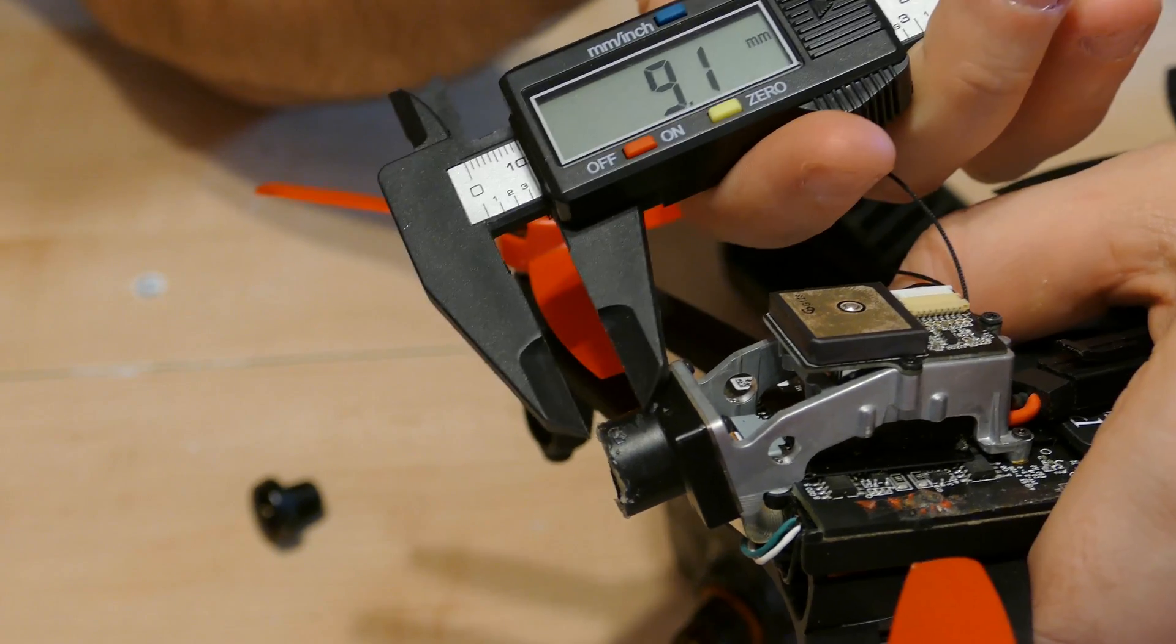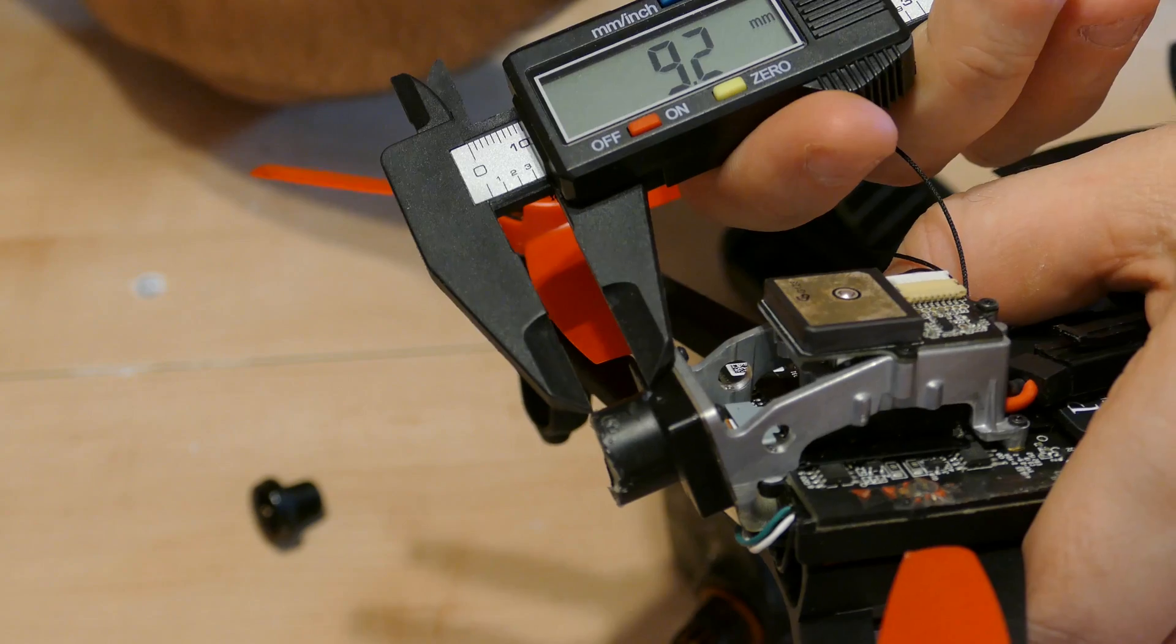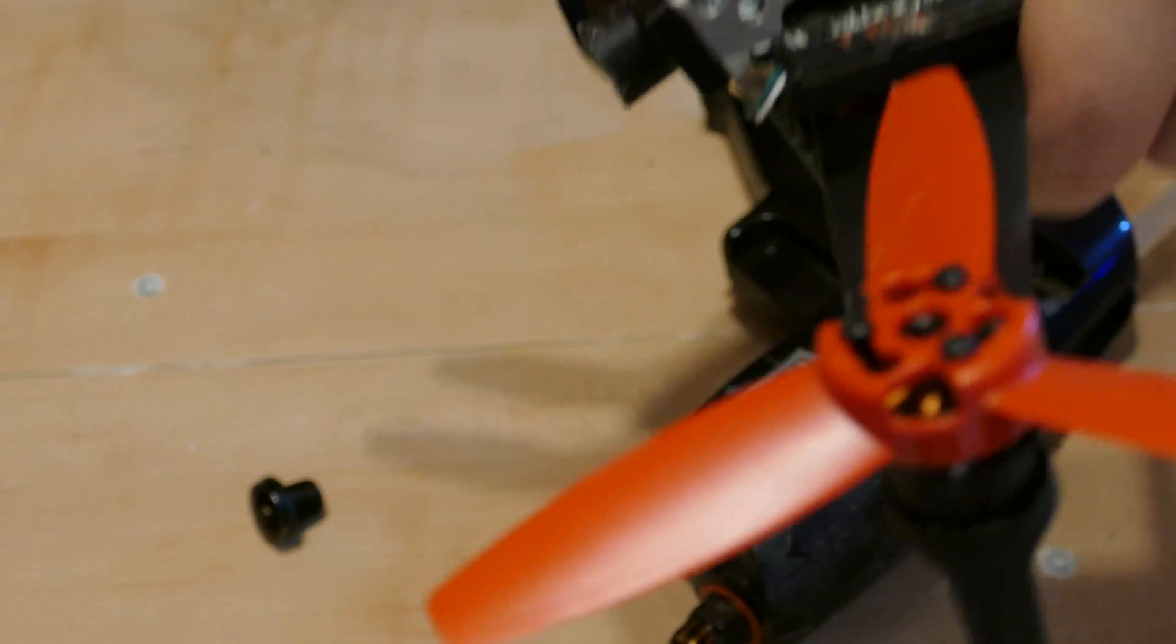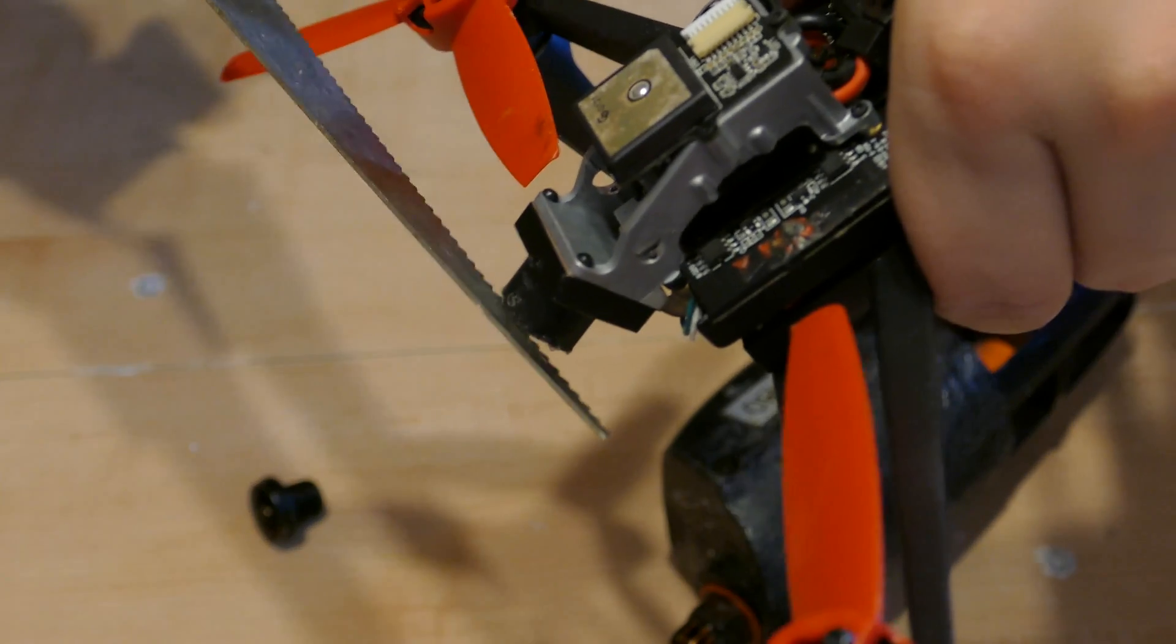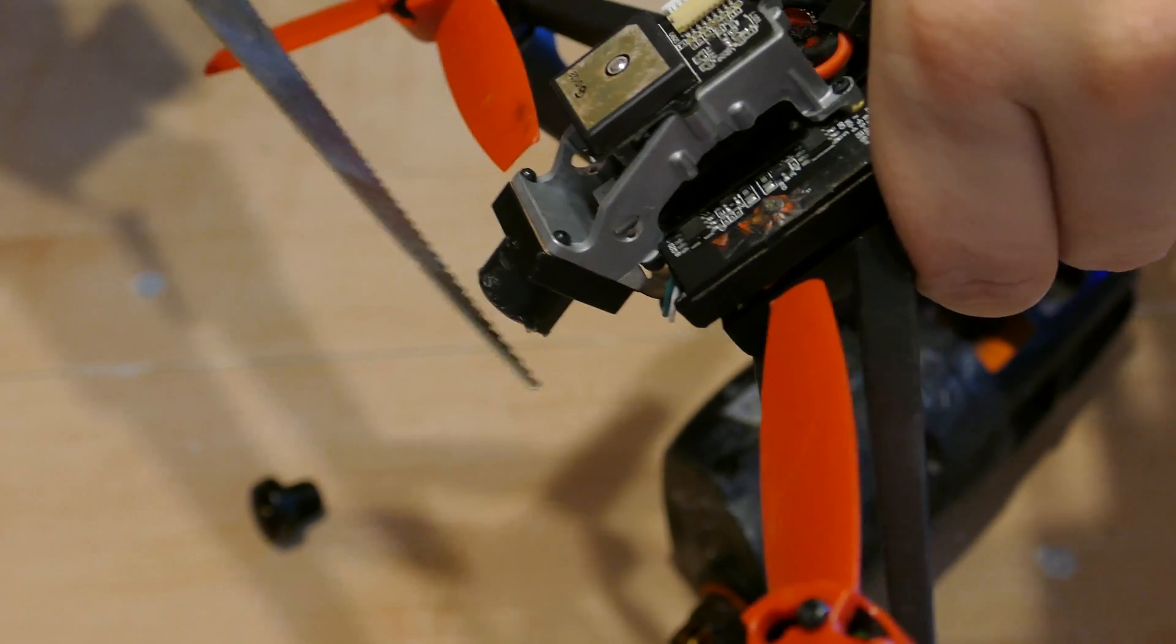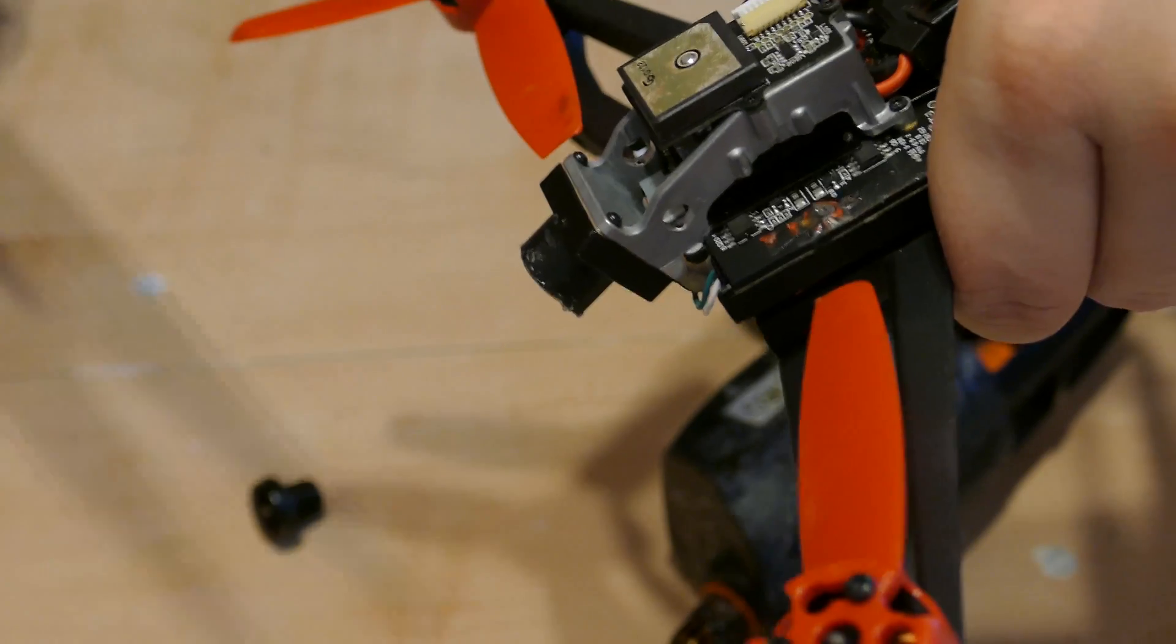I had to cut it about 9mm or so. Basically, when you cut it, you want to hold the drone down so any parts will fall down and not inside the sensor.